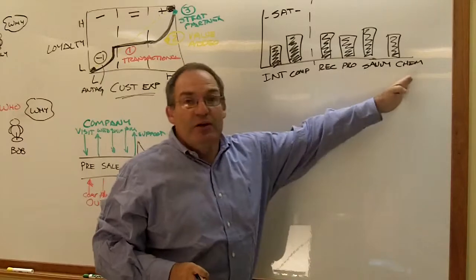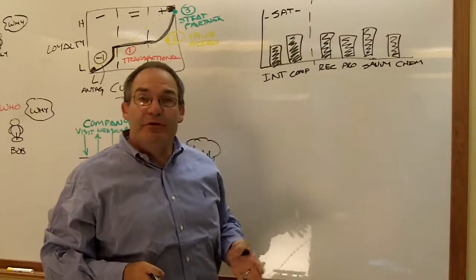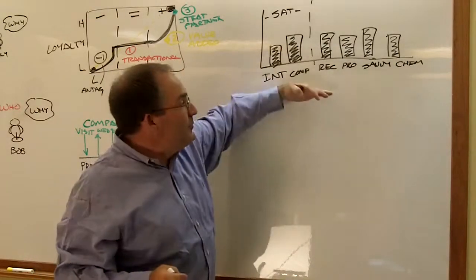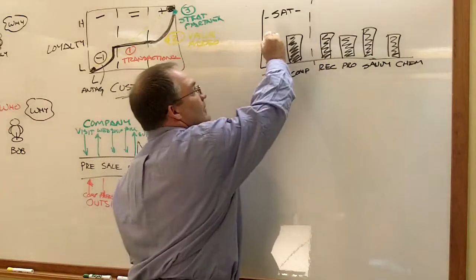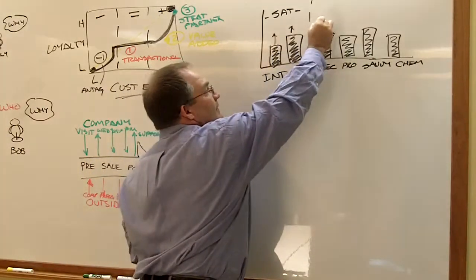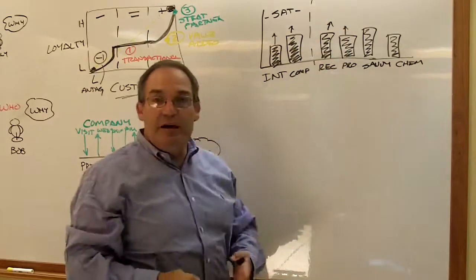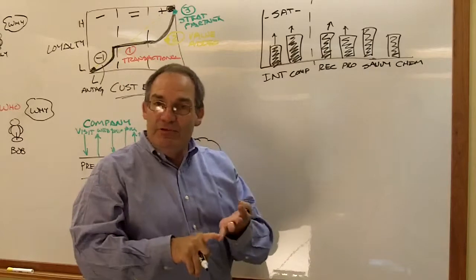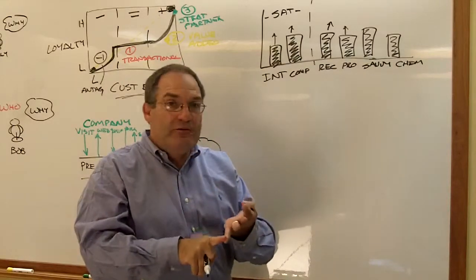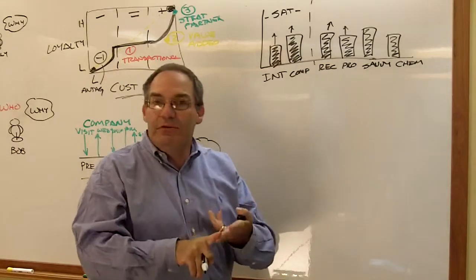These six things are what every business buyer is looking for from their supplier. When these scores are low, I start looking around for someone else. When these are high, I believe I'm getting good value. I believe I've got a trusted advisor. I believe I have a strategic partner. And all those great behaviors come - greater share of wallet, repurchase rate, referrals, etc.